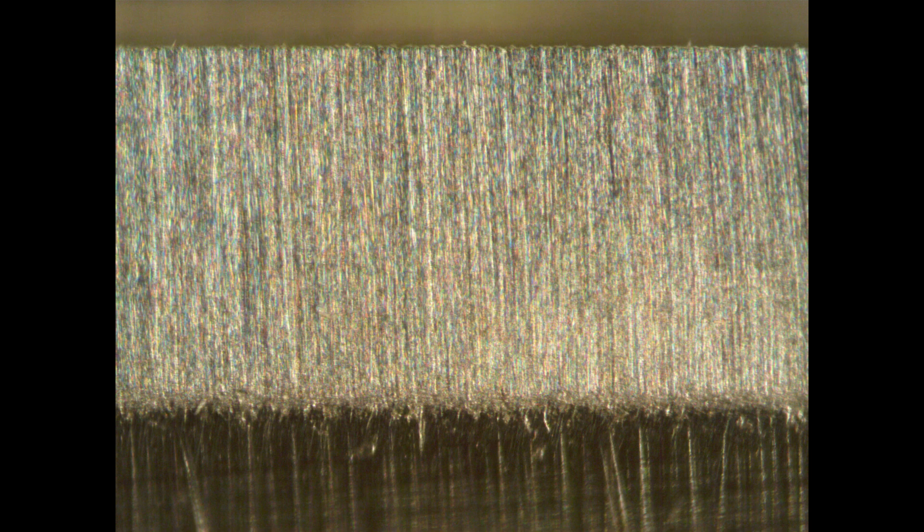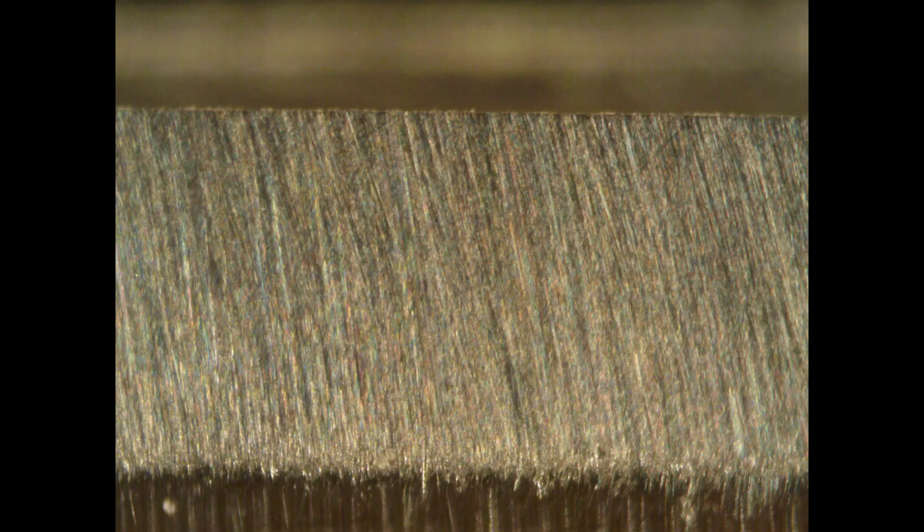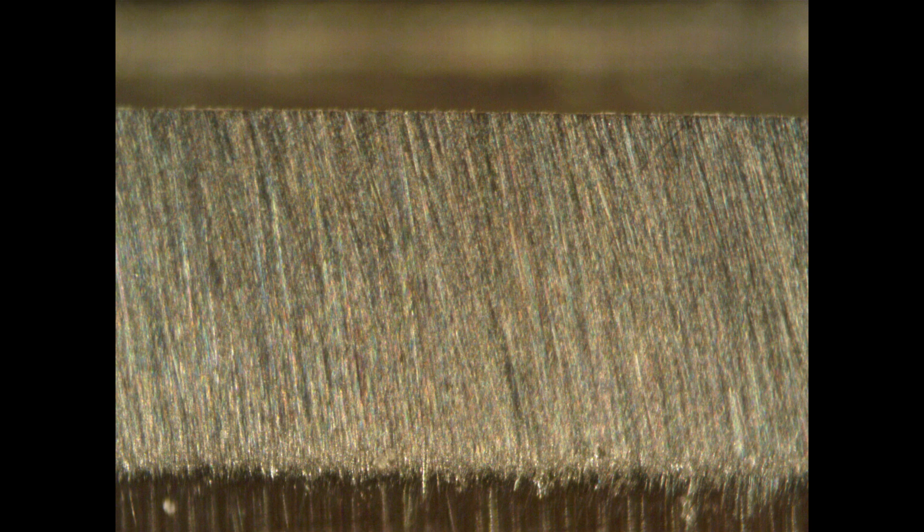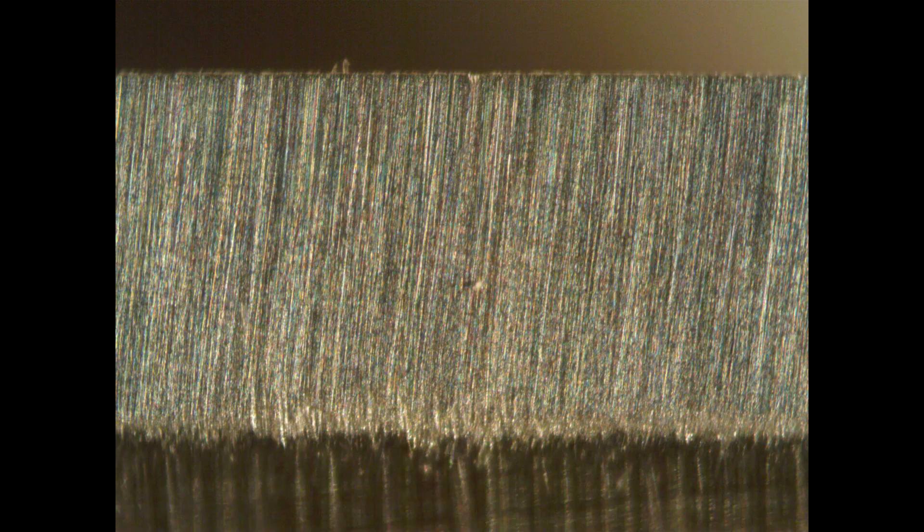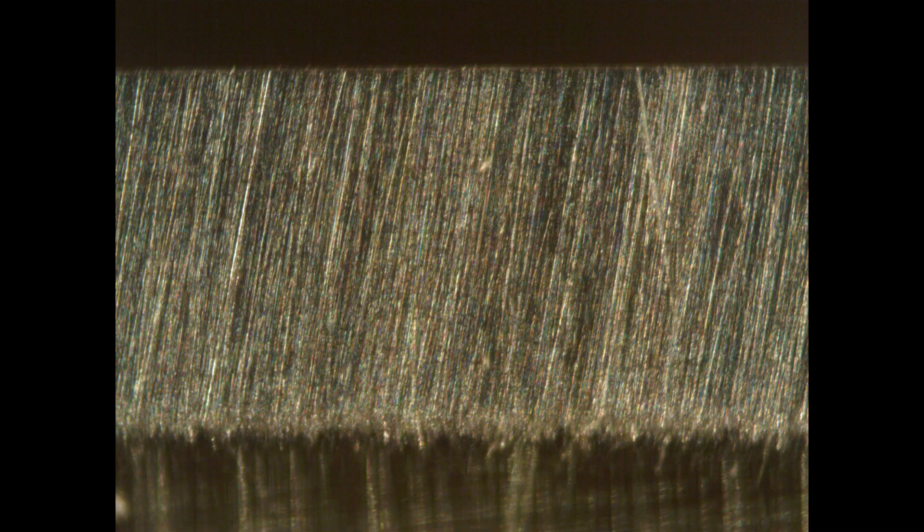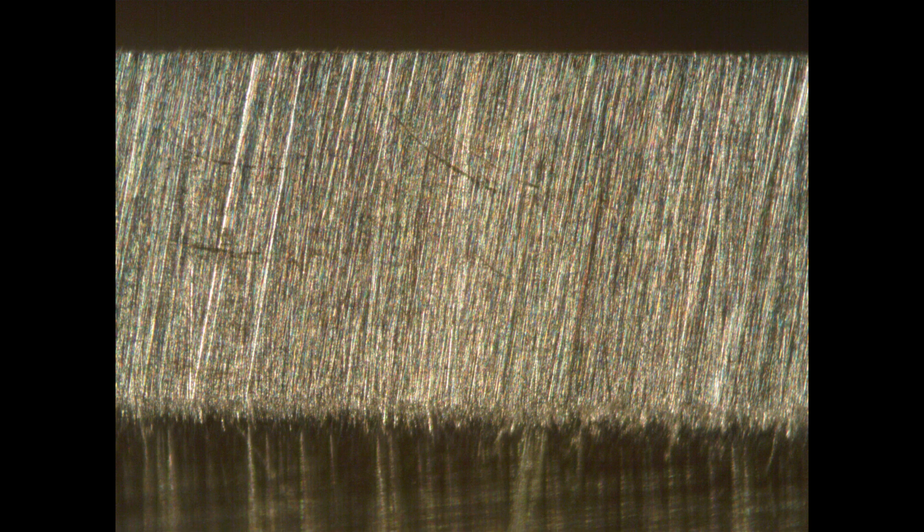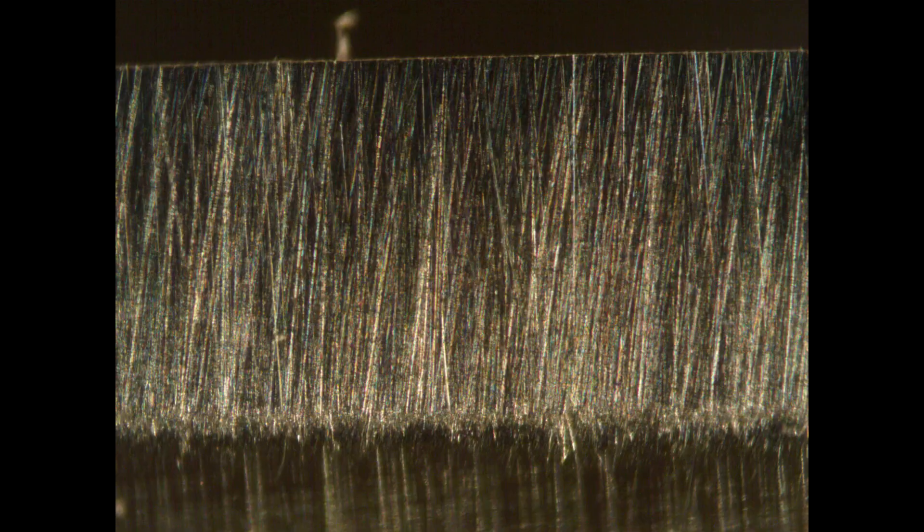Here's the 2000 grit Shapton glass and then next is the 4000 Shapton but I only did two strokes to kind of show the difference but it really doesn't show up well here. So let's go on. Here's the 4k Shapton with full all the strokes on it so it's done. Then the 8k Shapton, the 16k Shapton and finally the 30k Shapton.